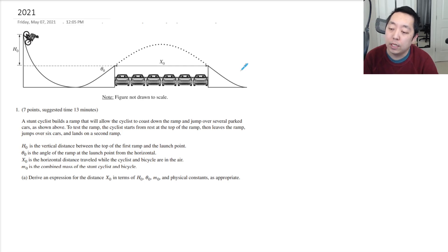A stunt cyclist builds a ramp that will allow the cyclist to coast down the ramp and jump over several parked cars, as shown above. To test the ramp, the cyclist starts from rest at the top of the ramp, then leaves the ramp, jumps over six cars, and lands on the second ramp.